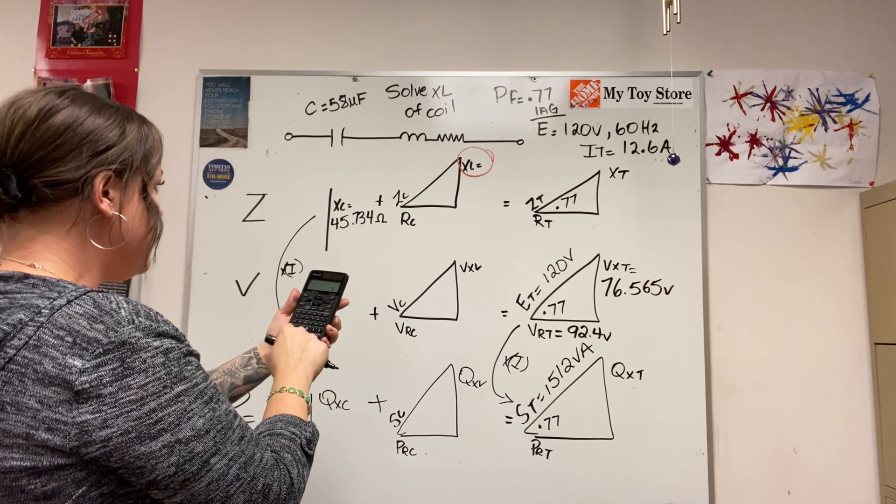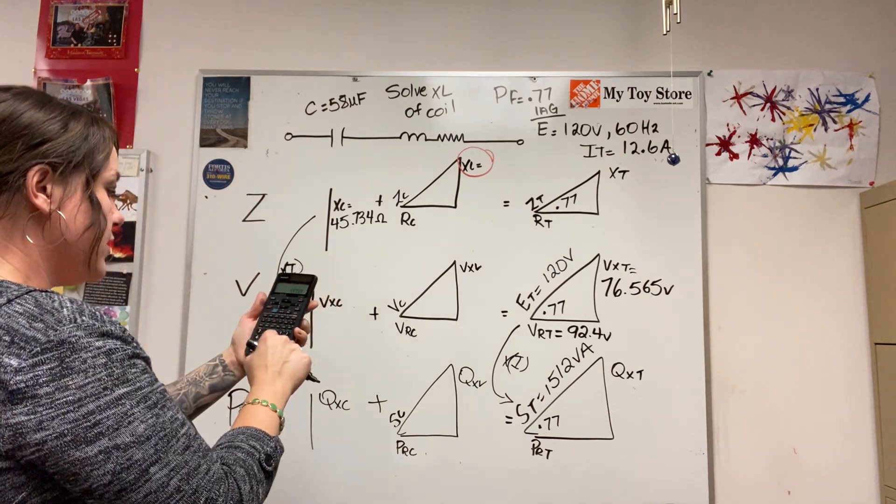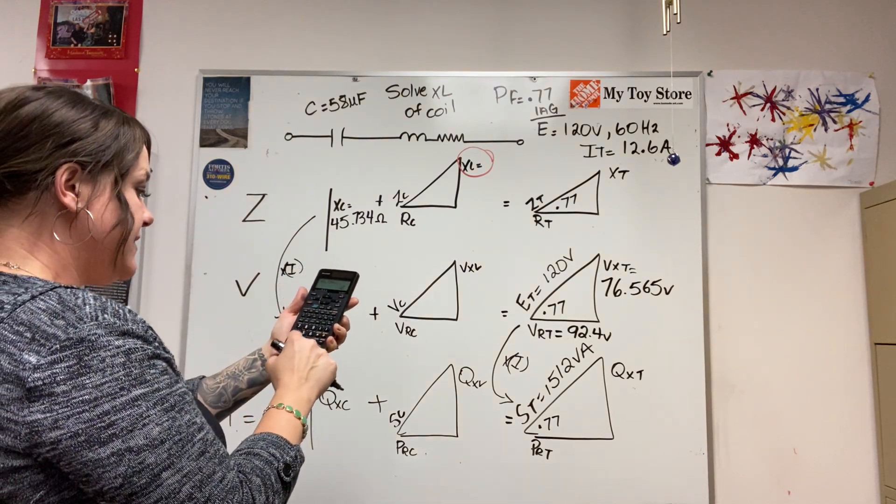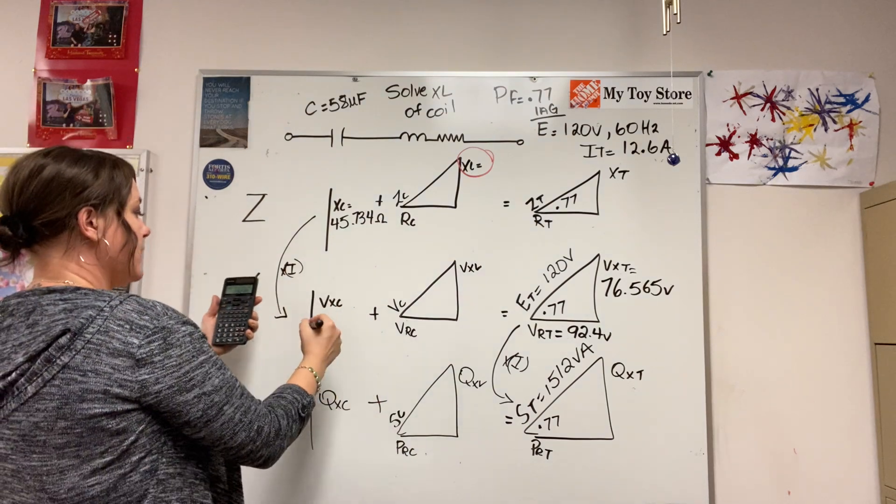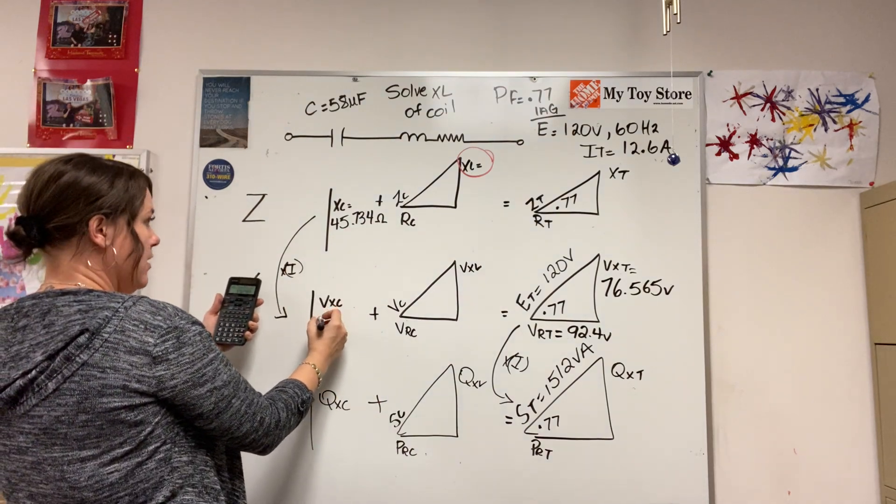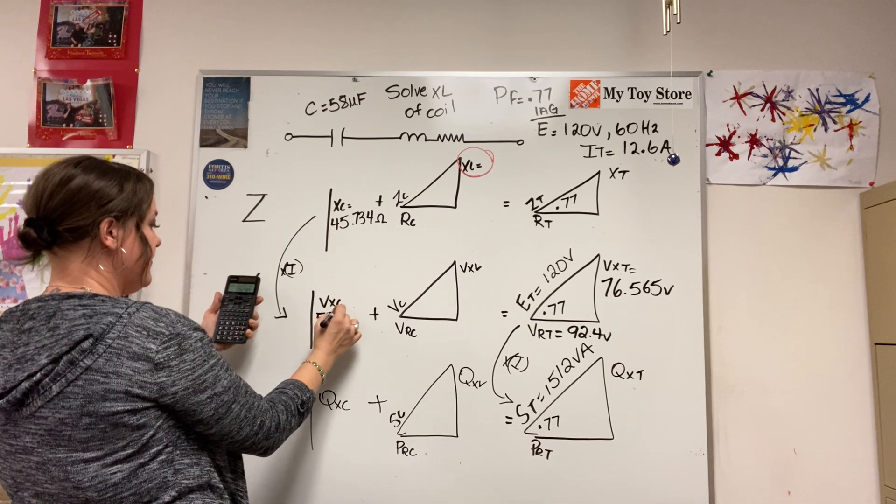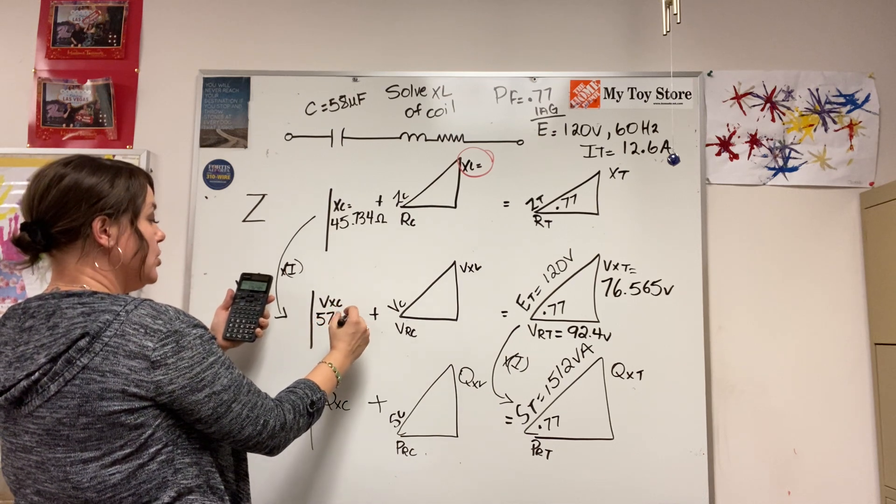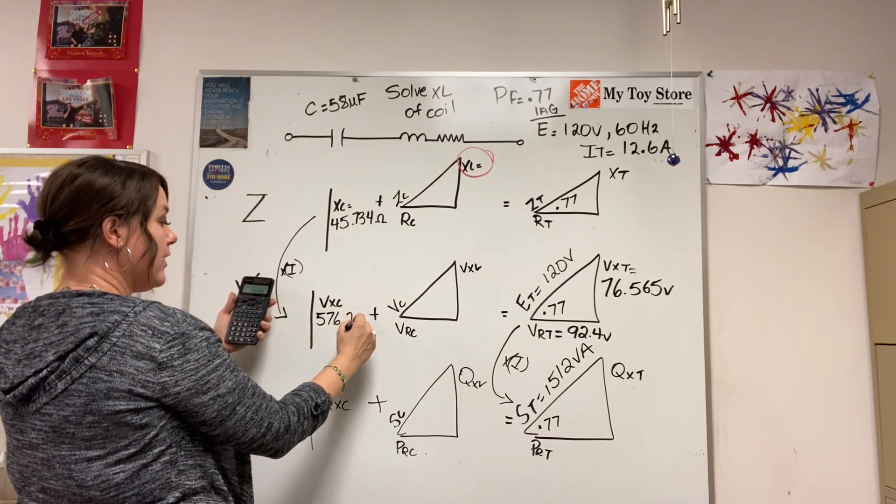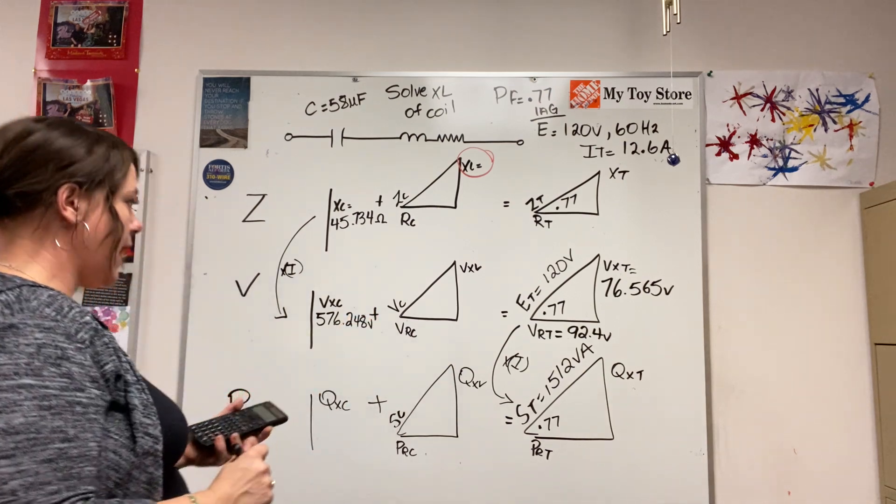So 45.734 times 12.6 amps equals I have a volt drop of 576.248 volts.